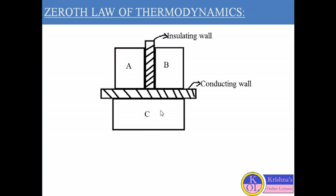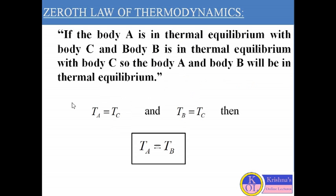The zeroth law of thermodynamics states that if body A is in thermal equilibrium with body C, and body B is in thermal equilibrium with body C, then body A and body B will automatically be in thermal equilibrium with each other.